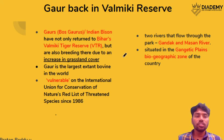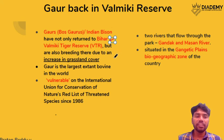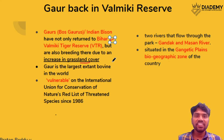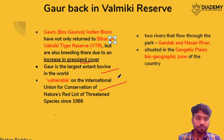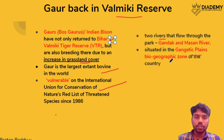The Gaur (Indian Bison) has returned to Valmiki Tiger Reserve in Bihar, with a significant increase in numbers due to increased grassland cover. This demonstrates that habitat protection is the most effective conservation strategy. The Gaur is the largest extant bovine in the world and is classified as Vulnerable by IUCN. Valmiki Tiger Reserve has two rivers flowing through it — the Gandak and Masan — and is situated in the Gangetic Plains biogeographic zone.